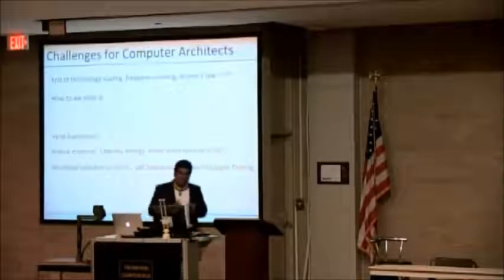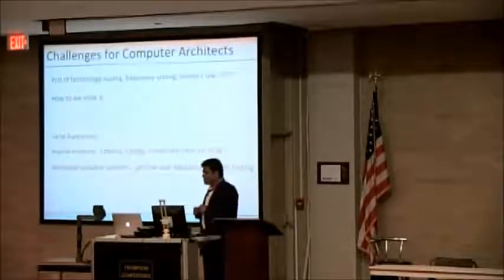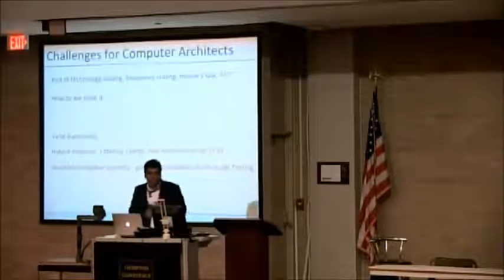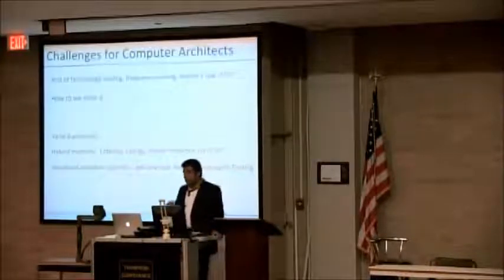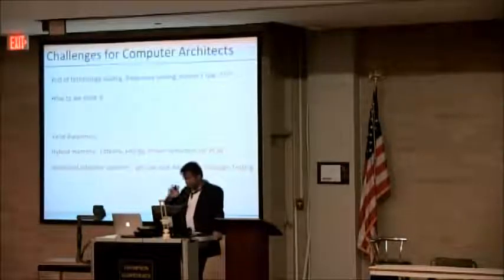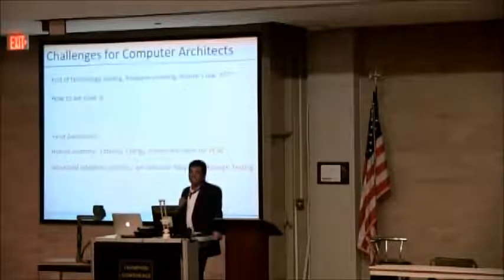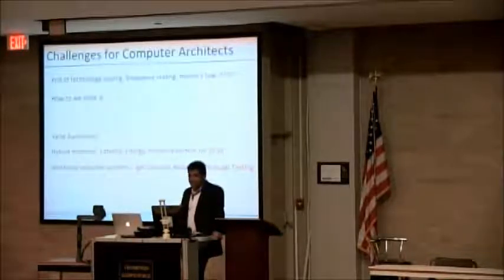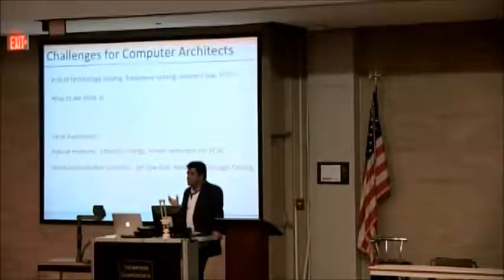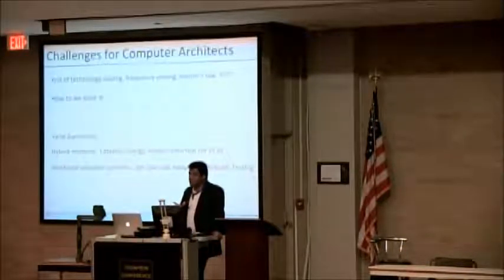A lot of people have talked about the challenges — end of Moore's Law, technology scaling, frequency scaling. What I have talked about are specifically three approaches. First, rather than saying Moore's Law is ending and we can't scale, let's give a helping hand to the technology folks — say that if you have erroneous bits, we'll take care of it, but continue to scale. Second, how can we integrate newer memory technologies into existing systems? If we just replace DRAM, it incurs too much latency, energy, and power, so figure out how to do that cost-effectively, maybe using a hybrid approach. Third is a workload-optimized system — how do you optimize your processor or system for a given application rather than on an average case.